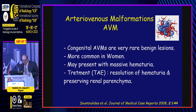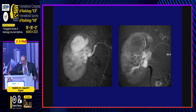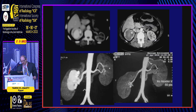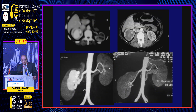Arteriovenous fistula is a congenital anomaly and rare benign lesion, more common in women. This is a case of a 42-year-old female presenting with hypertension and severe hematuria, with a large arteriovenous malformation on CT angiography. On renal angiography all vessels are opacified; we reach the feeding artery, inject embolic material, and the post-embolization angiogram shows no filling of the malformation, only the stump. CT before and after follow-up and CT angiography before and after embolization are demonstrated.